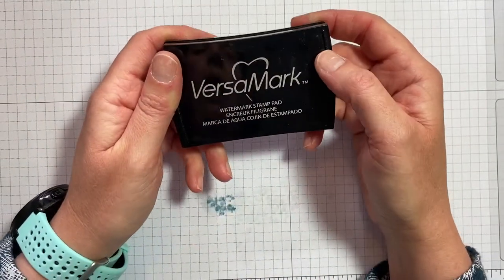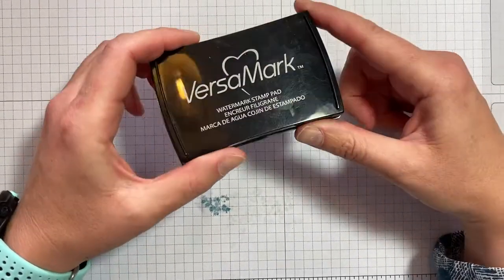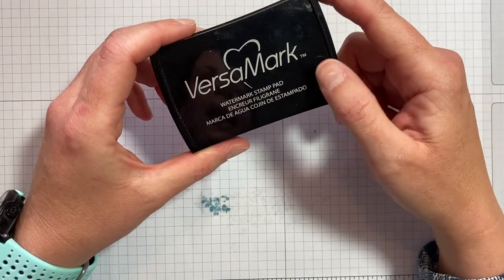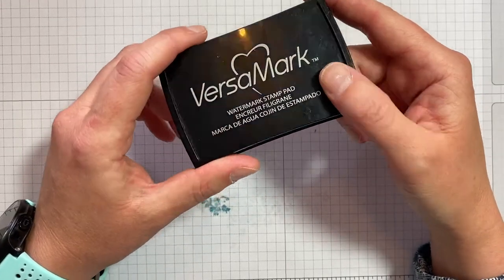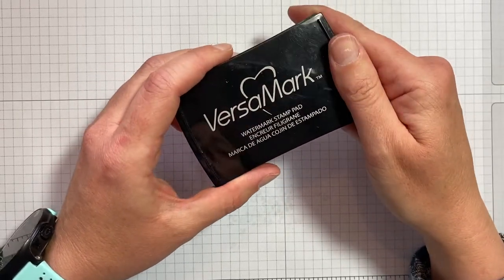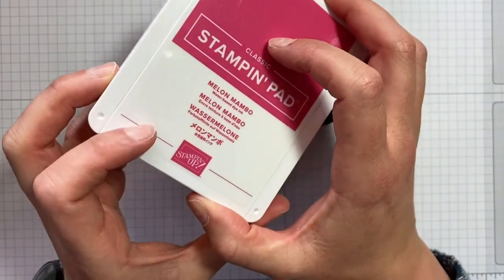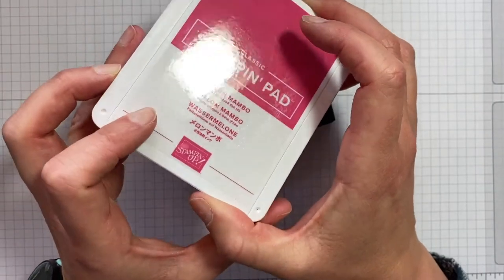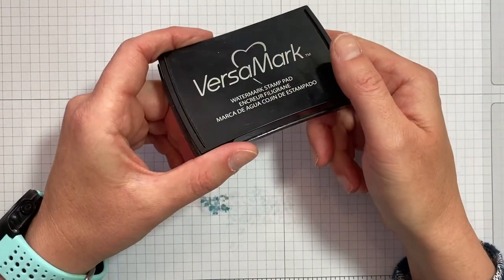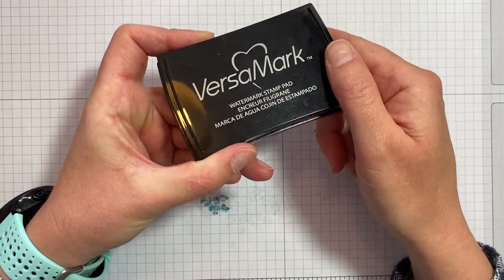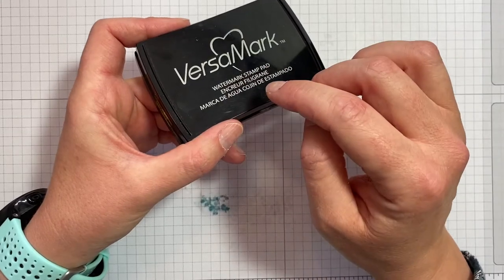Next, we can look at the Versamark. Now this, we're not going to cover it in great detail because there will be a whole lesson on heat embossing, but this is basically a sticky ink. So it dries much more slowly than the classic stamping pad. These dry really quickly because they're water-based dye. So the paper, the cardstock just soaks it up and it dries really quickly. The Versamark is designed to not dry quickly and to remain sticky to give you time to apply your embossing powder and heat emboss.